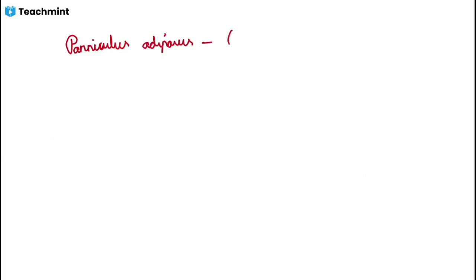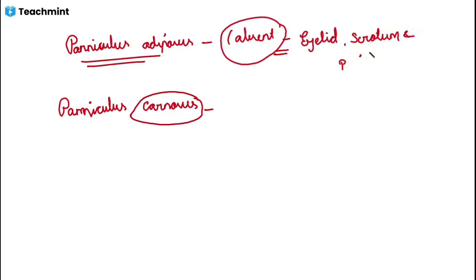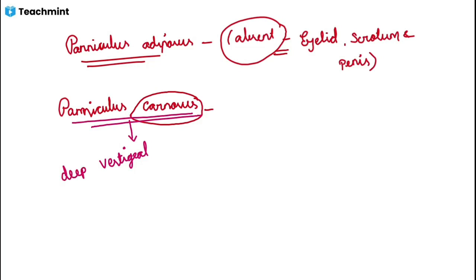Another two important MCQ points related to the panniculus: panniculus adiposus is nothing but the subcutaneous fat, and it is absent in a few areas. Panniculus adiposus is absent in the eyelid, the scrotum, and a few other areas — remember these exceptions. Also, do not confuse panniculus carnosus with a regular muscle; it is a vestigial muscle, meaning it has no functional use.